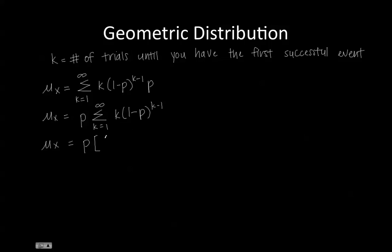And then we're going to add, if we have k equal to 2, we get 2 times 1 minus P, where 2 minus 1 equals 1.